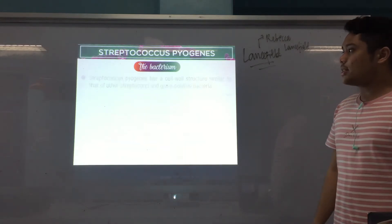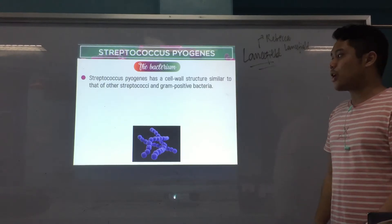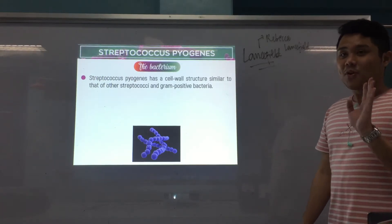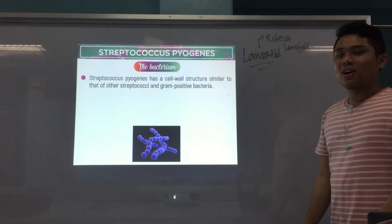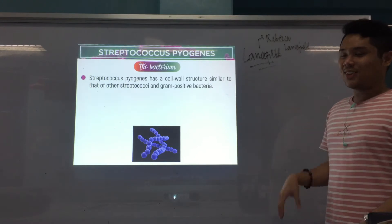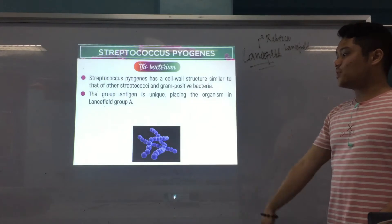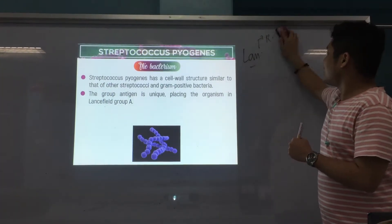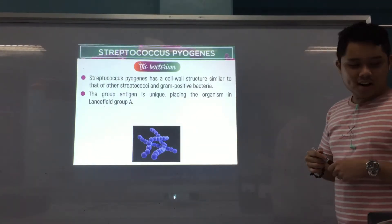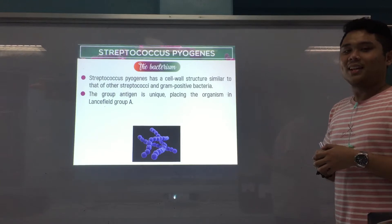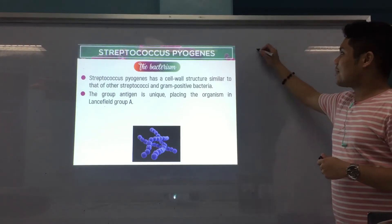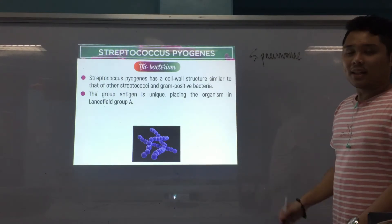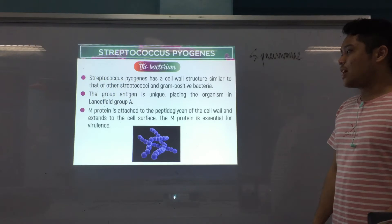Its cell wall structure is similar to other gram-positive bacteria. Recall that all cocci are gram-positive except Neisseria, Veilonella, and Moraxella. Its group antigen is unique due to the Lancefield Group A antigen. Notably, Streptococcus pneumoniae — the pneumococcus — lacks the Lancefield antigen, which is an important distinguishing characteristic among Streptococcus species.